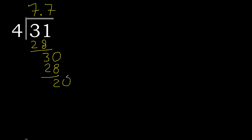Always complete with 0. Point is here: 20. 4 multiplied by 5 is 20, ok, is not greater. 20 minus 20 is 0.